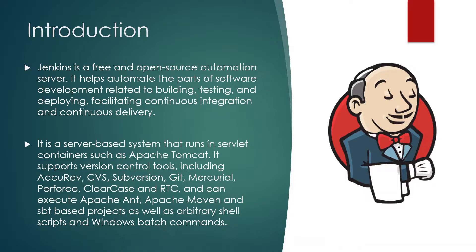We'll discuss continuous integration and continuous delivery later. Jenkins is a server-based system that runs in servlet containers such as Apache Tomcat — people from a Java background will understand what a servlet and Apache Tomcat are. It supports version control tools including Accurev, CVS, Subversion, Git, Mercurial, Perforce, ClearCase, and RTC. These are all SCMs; CVS and Subversion are quite older.